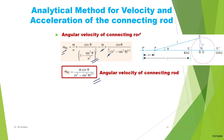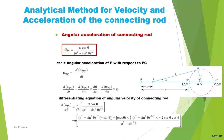Now, knowing the angular velocity of the connecting rod, we can find its angular acceleration. The angular acceleration is the rate of change of angular velocity, so α_PC = d(ω_PC)/dt. This can be written as d(ω_PC)/dθ multiplied by dθ/dt. Since dθ/dt is the angular velocity of the crank, this equals d(ω_PC)/dθ multiplied by ω.